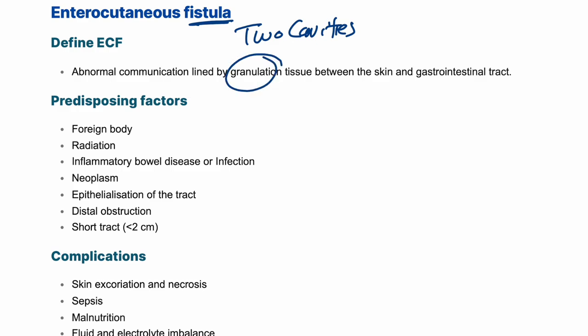Predisposing factors for an enterocutaneous fistula involve communication between the bowel and the skin or external environment — these are the two cavities. So what are the risks of having this enterocutaneous fistula?